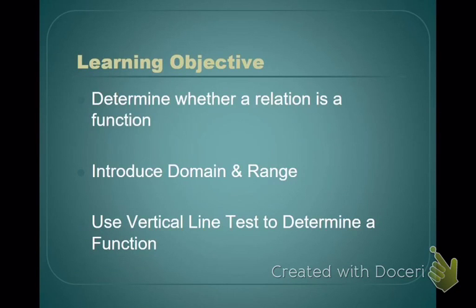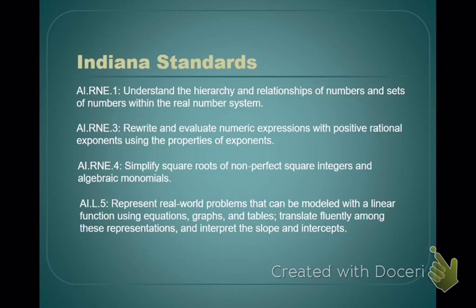By the time we're finished here, you should be able to determine whether a relation is a function, know what domain and range are and how to find them, and use the vertical line test to see if a relation is a function. There are standards that we're going to hit.